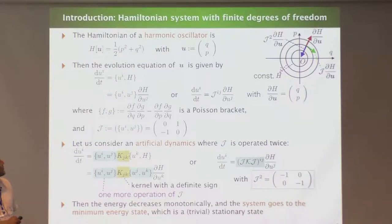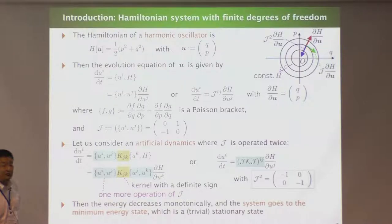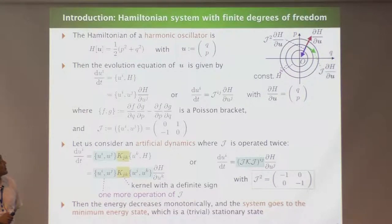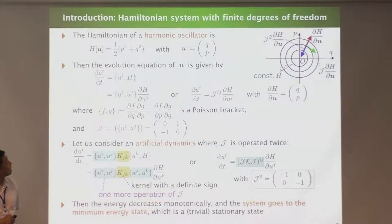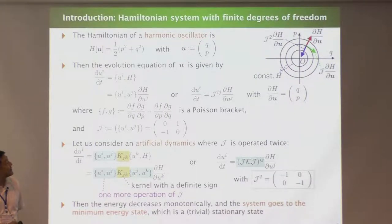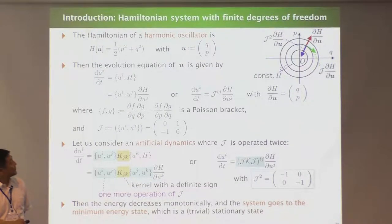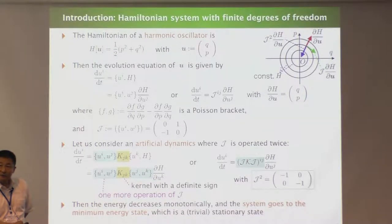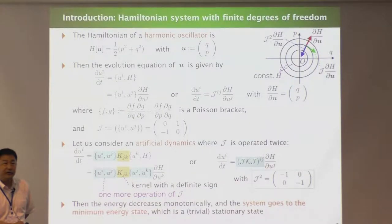The state vector is Q and P, and the evolution equation for this state vector is given by this one. This curly bracket is a Poisson bracket defined by this equation. Rewriting, we get that the evolution of the state vector is given by the gradient of the Hamiltonian multiplied by this Poisson tensor, which is a skew-symmetric tensor.